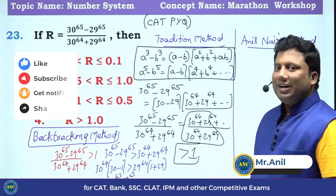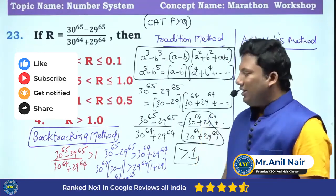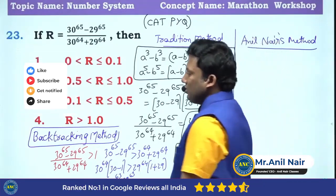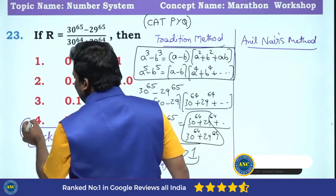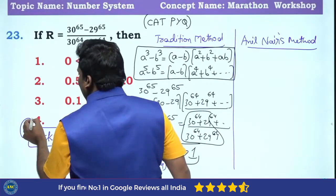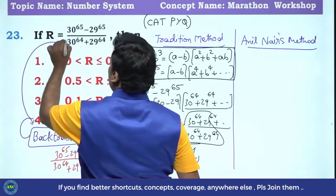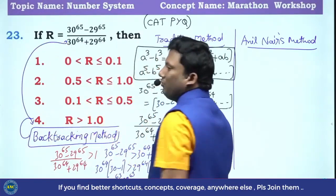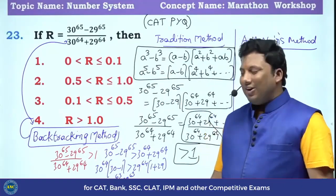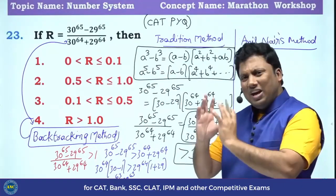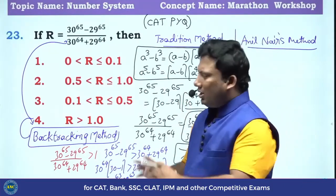Definitely 30 power 63 is greater than 29 power 63. This is the backtracking method: I choose the answer option and check whether it is mathematically right or wrong. A very unique way of solving.